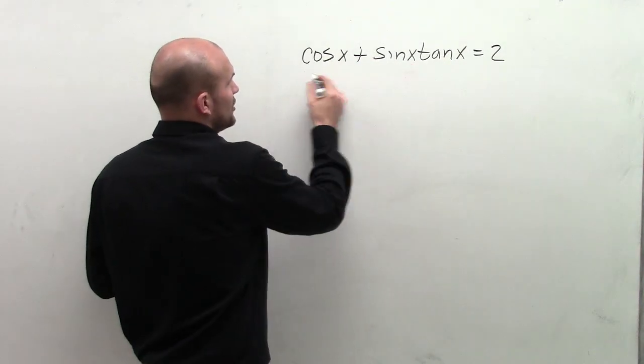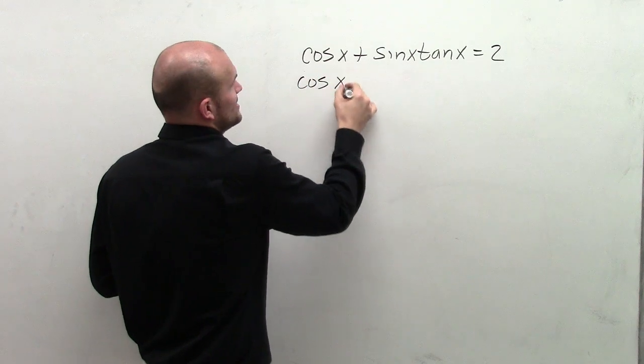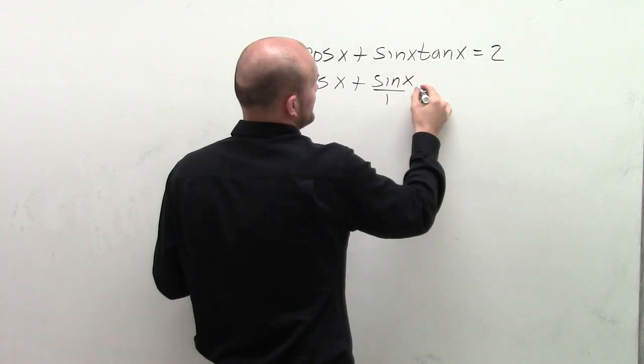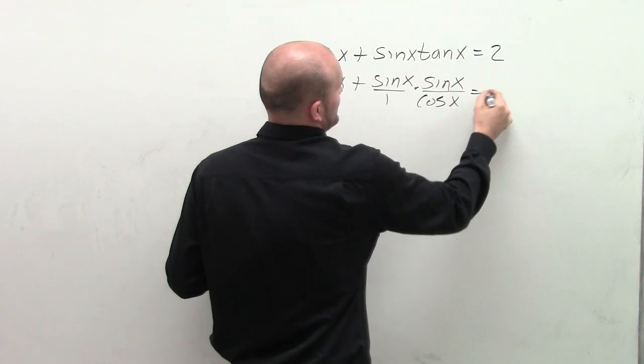So if I convert my tangent to sine squared over cosine squared by using the quotient identity, I have cosine of x plus sine of x over 1 times sine of x over cosine of x equals 1.